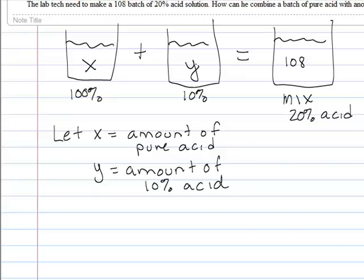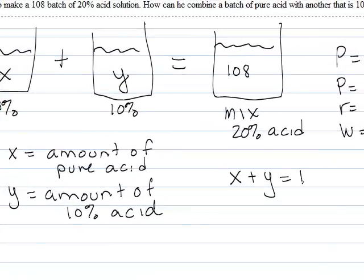And what we have here is that there will be an X amount in here, and a Y amount in here. So if we take the whole amounts, that would give us the first equation, X plus Y equals 108.